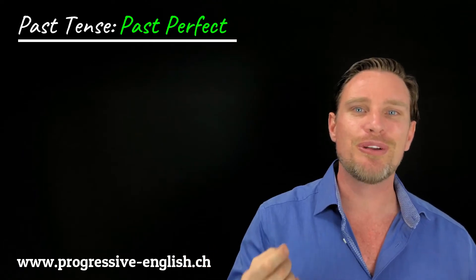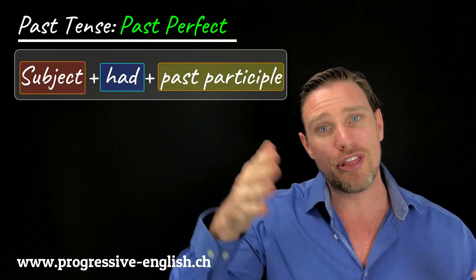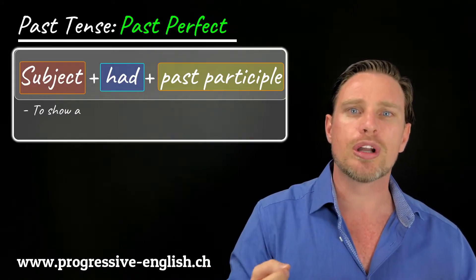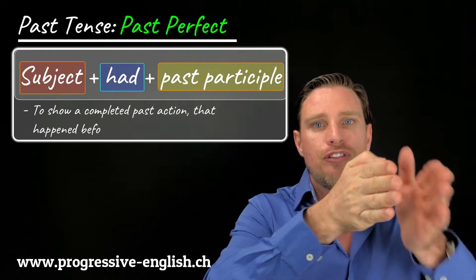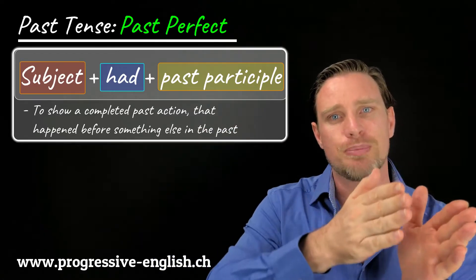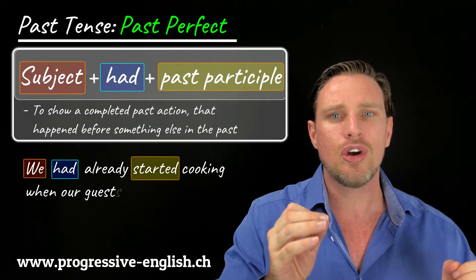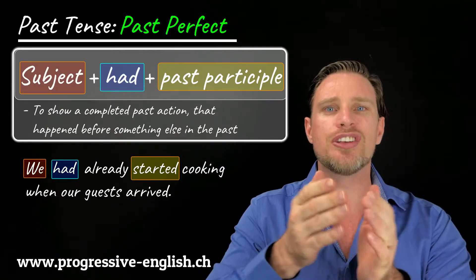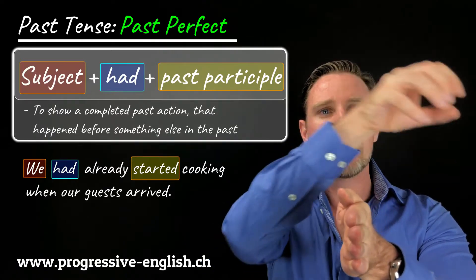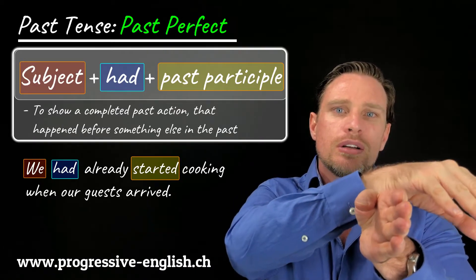That brings us to the past perfect. We form past perfect with subject plus 'had' plus the past participle — the third form of the verb. We use the past perfect to sequence past actions — to show a completed past action that happened before something else in the past. For example: We had already started cooking when our guests arrived. This means when our guests arrived, we had already started cooking — it happened before something else in the past.